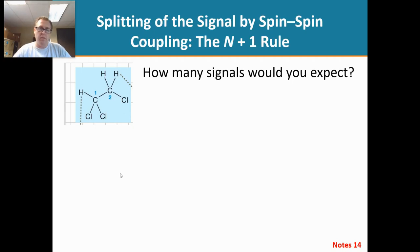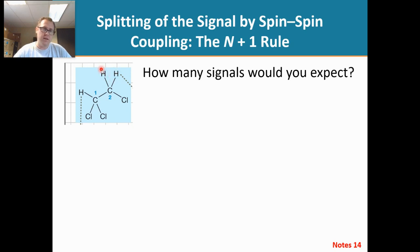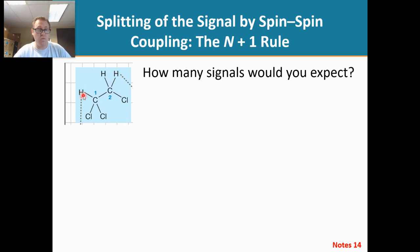Hello class. When we look at this molecule shown right here, how many signals would you predict? On carbon one there's one hydrogen, and on carbon two there's two hydrogens. The question is: are these two hydrogens equivalent or not? You can do the replacement test, or you could see that there is a plane of symmetry through this molecule, which means that these two hydrogens are enantiotopic — they are equivalent. So we would expect one signal for this proton and a second signal for these two protons.